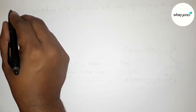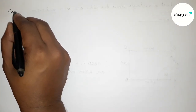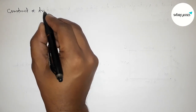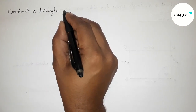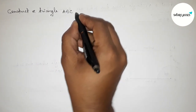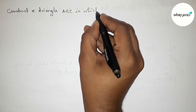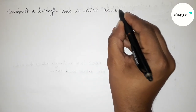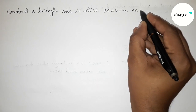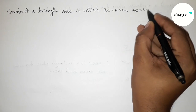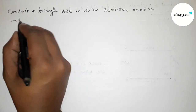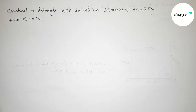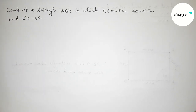Hi everyone, welcome to Essay Share Classes. Today in this video we have to construct a triangle ABC in which BC equals 6.5 centimeters, AC equals 5.5 centimeters, and angle C equals 60 degrees. Please watch the video till the end.